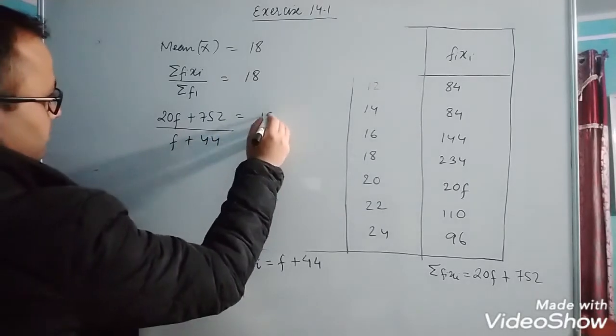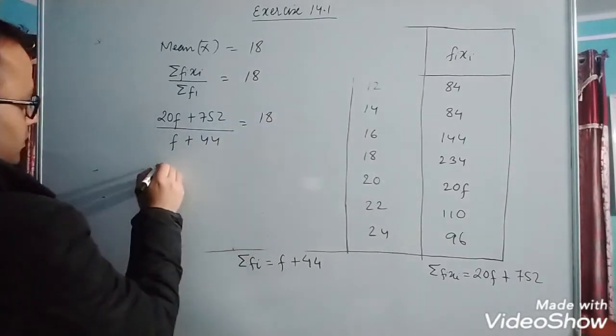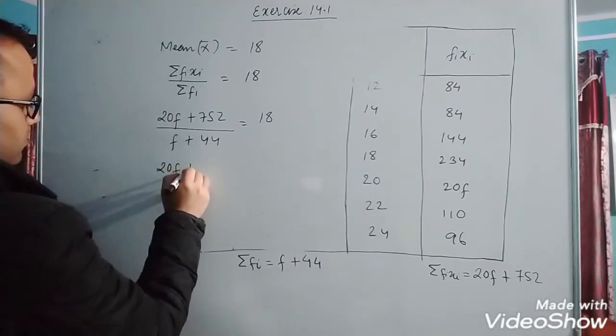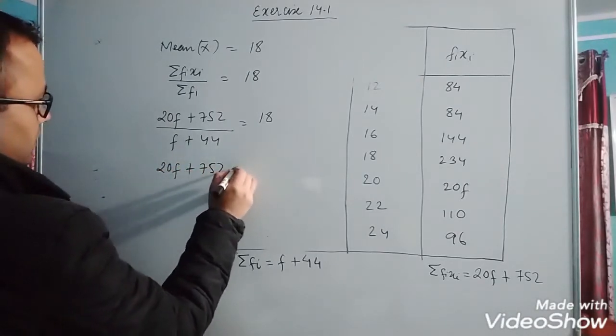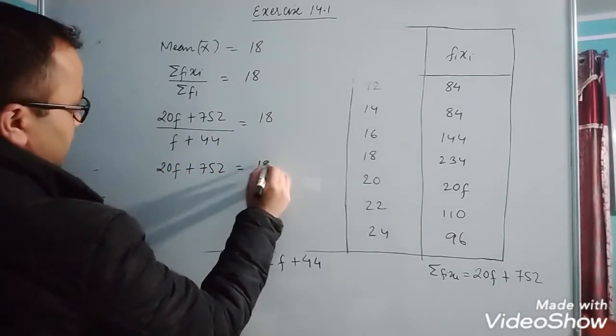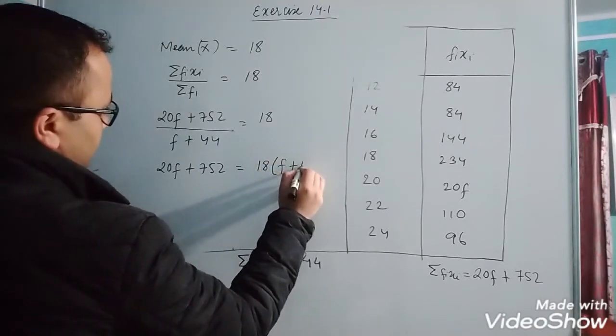Now cross multiply. 20f plus 752 equals to 18 into f plus 44.